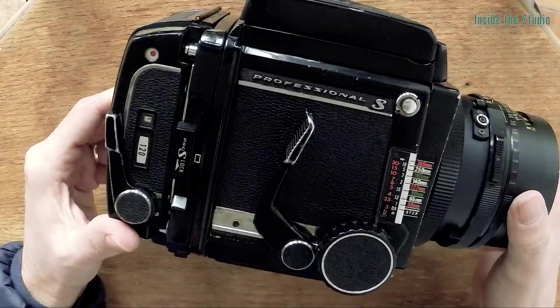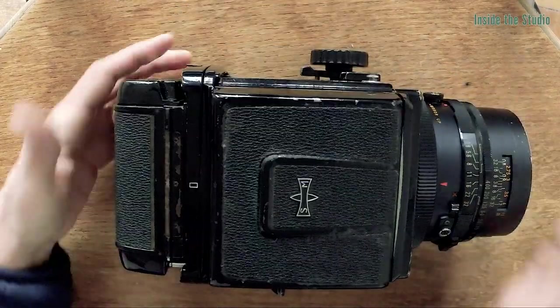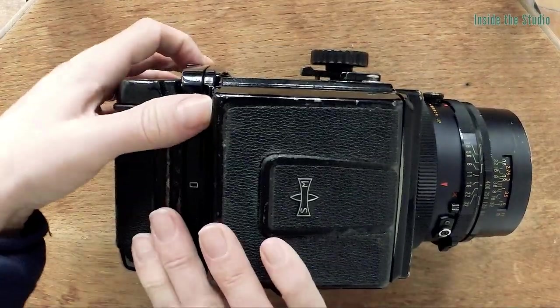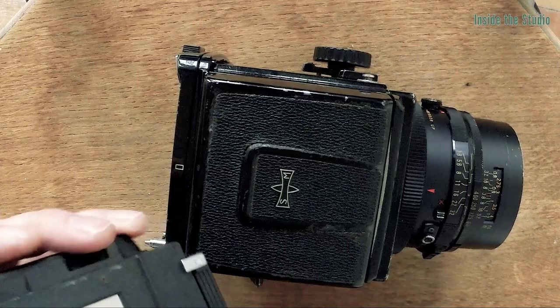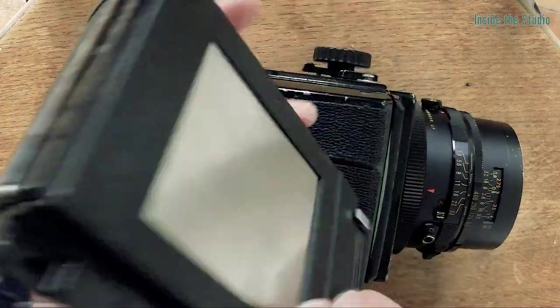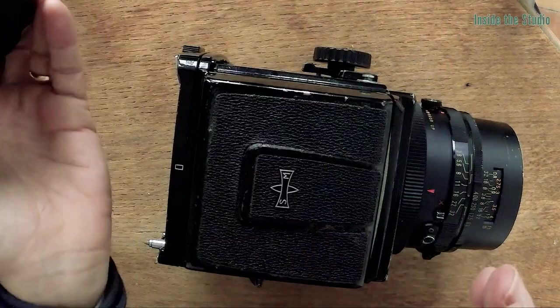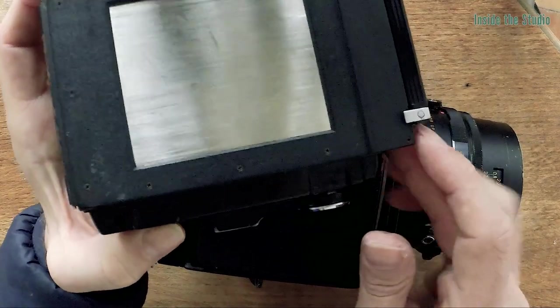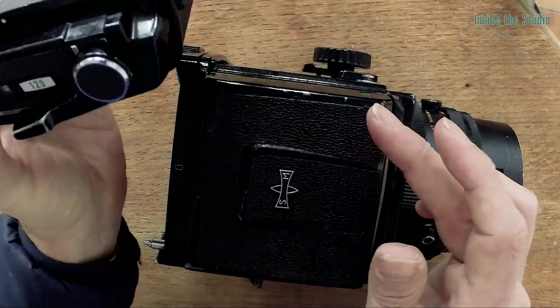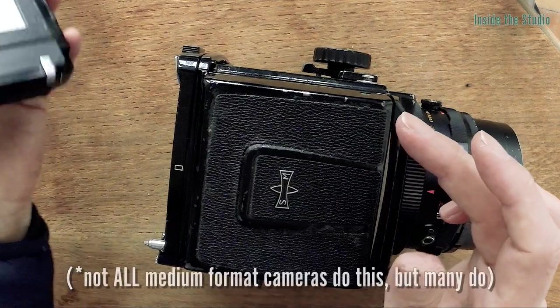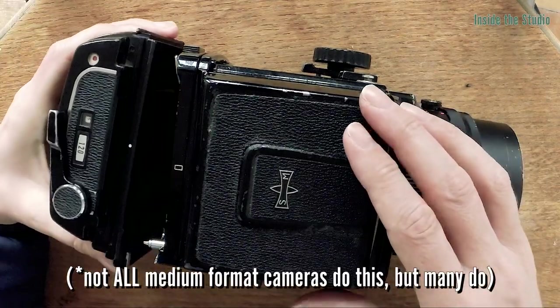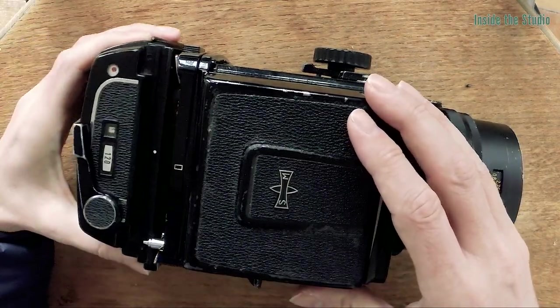One of the things I said about the annoyances of using a film camera were that I wanted to change, that is something which these medium format cameras think about. The film is in here so you can actually detach the film back and put a different back on with different film in it and continue to shoot and then go back to this film later if you've got more than one back.